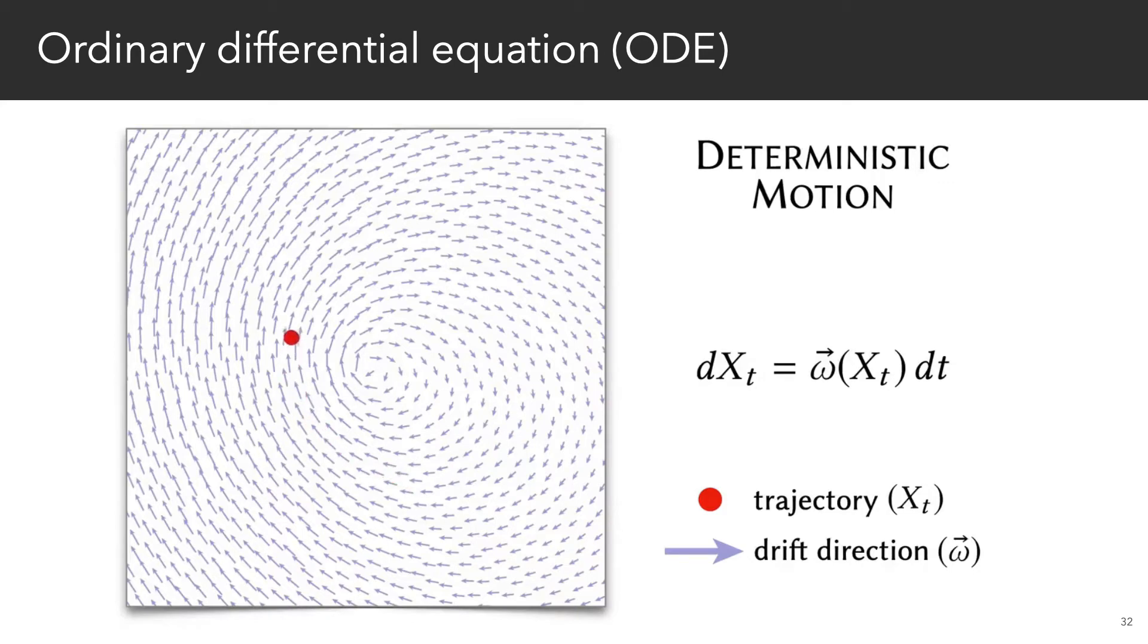dx omega dt says that a particle's velocity is given by some vector field omega. For example, a speck of dust blowing in the wind.